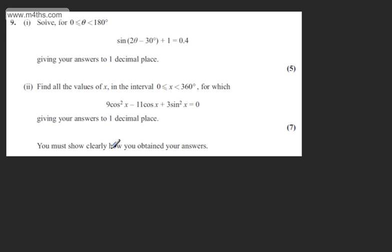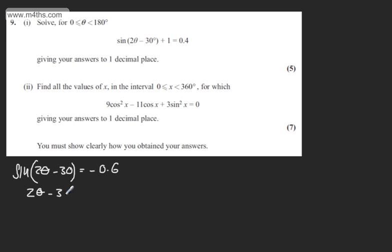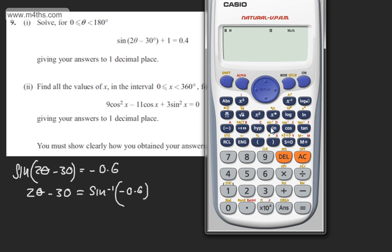There are lots of different approaches that you could take. The first thing I am going to do is subtract 1 from both sides of the equation, so we have sine of 2 theta minus 30 degrees equal to negative 0.6. At this stage I am going to take the inverse sine of both sides, which gives me 2 theta minus 30 degrees equals the inverse sine of negative 0.6. That gives me minus 36.869 and so on.